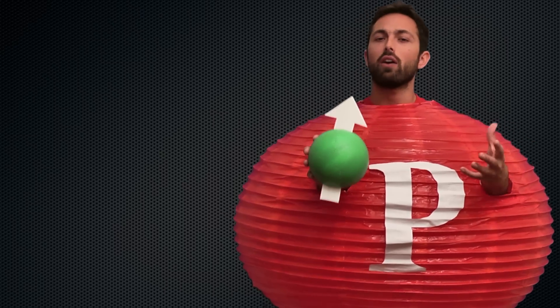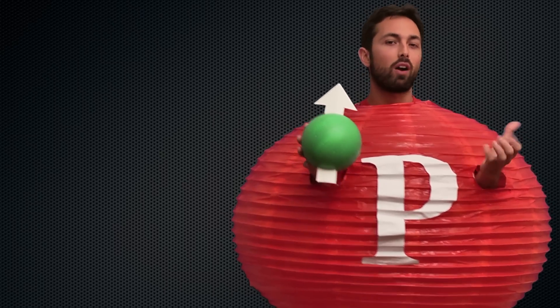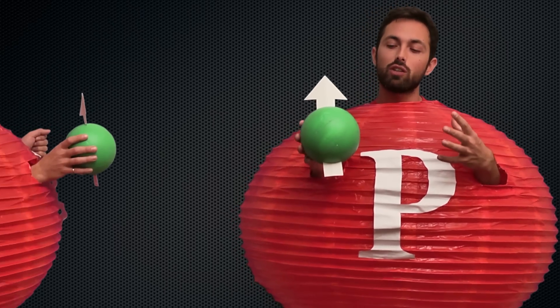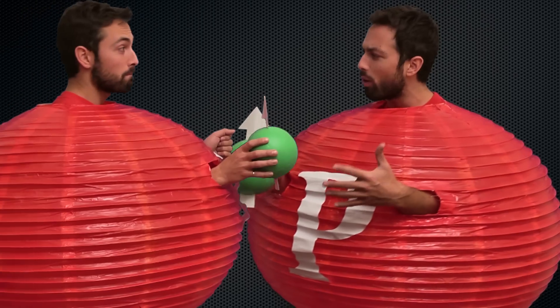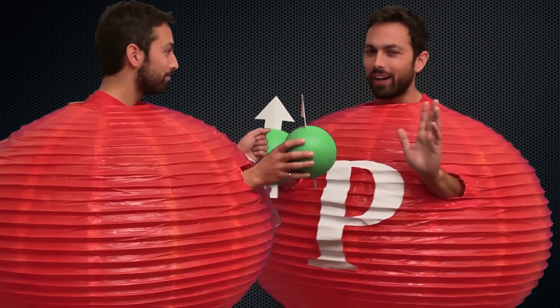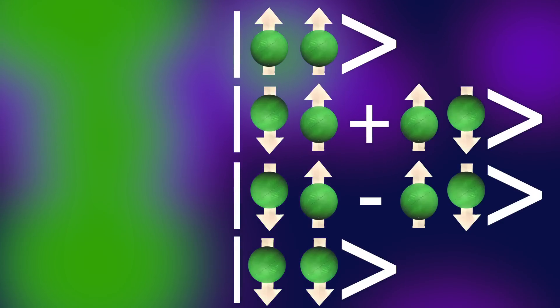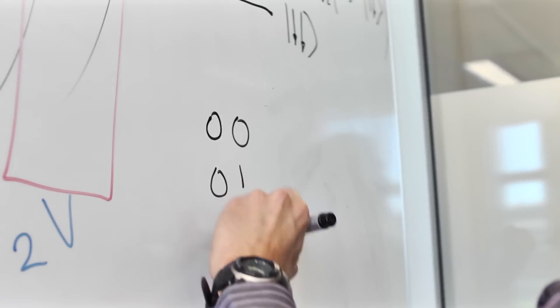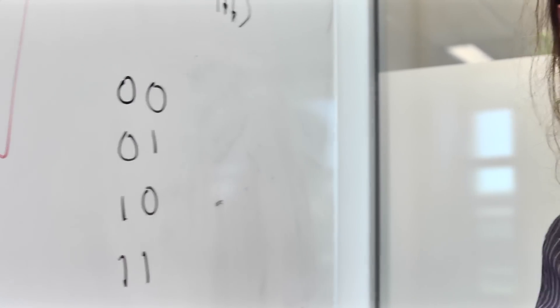Now it's hard to imagine how this enables the incredible computing power of quantum computers without considering two interacting quantum bits. Now there are four possible states of these two electrons. You could think that's just like two bits of a classical computer, right? If you have two bits, you can write 00, 01, 10, 11 — there are four numbers. But these are still just two bits of information.